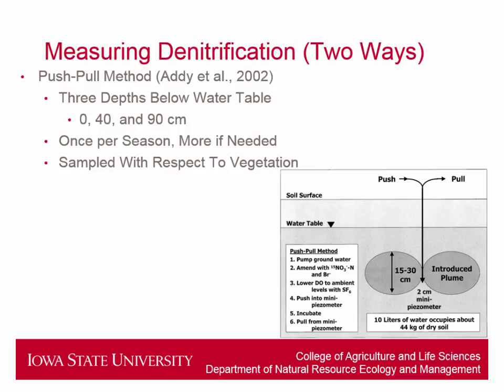These piezometer nests at three depths will be done in various locations throughout the buffer, done randomly, so we can assess the spatial variation. This push-pull method will be done once per season — once in spring, once in fall, once in summer — and more if needed, meaning if results are more variable than originally thought. It will be done with respect to vegetation type.